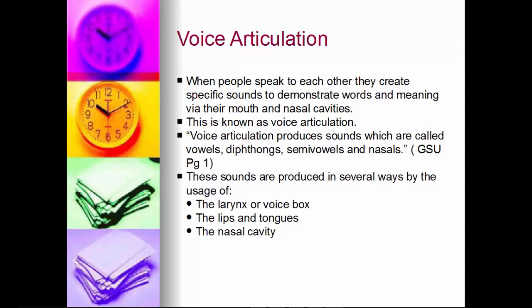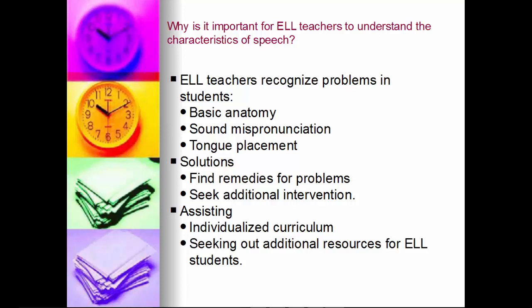It comes from the larynx, the voice box, lips, tongue, and nasal cavity. As a teacher you should understand these because the basic anatomy, sound pronunciation, and tongue placements are problems for some students. For example, in China they don't have the 'th' sound — instead they'll put their bottom lip through their teeth and make an 'f' sound to compensate because they've never heard it and don't know how to make it. By doing this you'll find remedies for those problems and seek additional intervention.